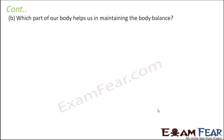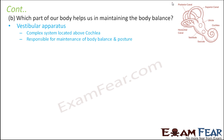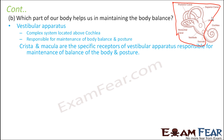Which part of our body helps us in maintaining body balance? The vestibular apparatus does that. It is a part of the inner ear located just above the cochlea, and it is responsible for maintenance of body balance and posture. Vestibular nerves connect it to the brain and send information regarding body balance. The specific receptors of the vestibular apparatus are crista and macula. Crista is the ridge present near the semicircular canals, and macula is the ridge present near the utricle and the saccule.